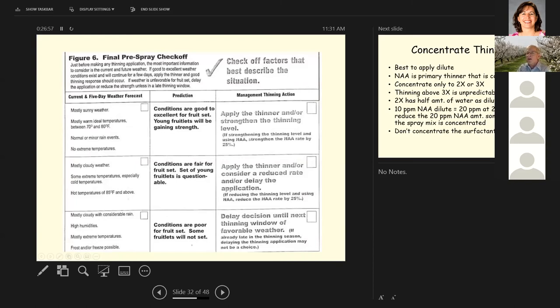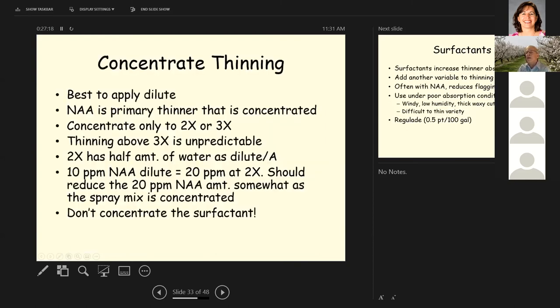Down here, if you've got mostly cloudy and considerable rain, high humidities, most extreme temperatures, frost and or freeze possible, conditions are really poor for fruit set. Some fruitlets will not set. You probably want to delay your decision until a better thinning window opens up for you.